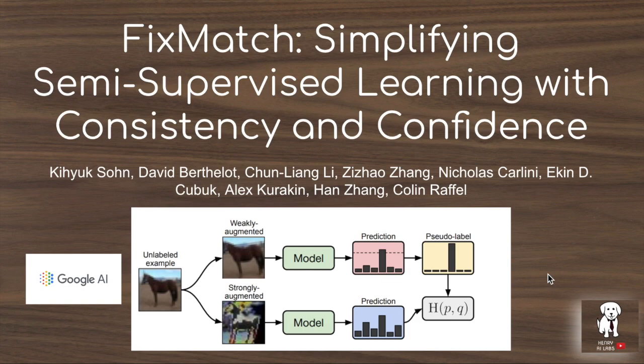FixMatch is a novel combination of consistency regularization through data augmentations and self-training or pseudo-labeling. This achieves remarkable performance in semi-supervised settings on CIFAR-10, such as about 95% accuracy using 250 labeled examples (25 per class), about 89% accuracy using 40 labeled examples (4 per class), and it even reaches 84% accuracy in the extreme case of only using one sample per class.